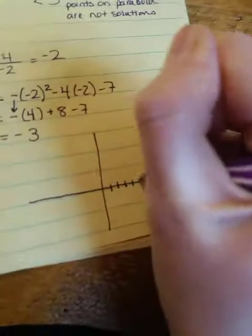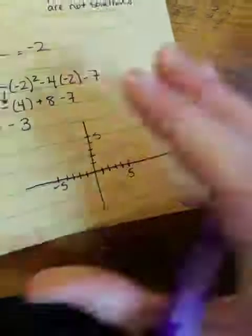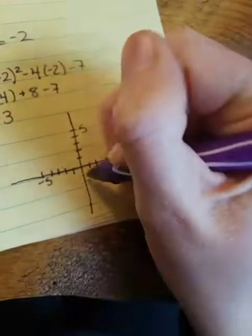All right, so 1, 2, 3, 4, 5. 1, 2, 3, 4, 5. You don't need to go this crazy with it, but I'll do it anyway.